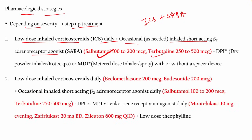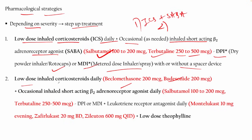For SABA, salbutamol 100–200 mcg or terbutaline 250–500 mcg can be used via DPI (dry powder inhaler, rotacaps) or MDI (metered dose inhaler). For low-dose ICS, beclomethasone or budesonide can be used, as we have already seen. That was step 1.